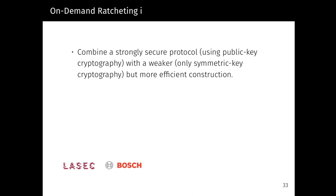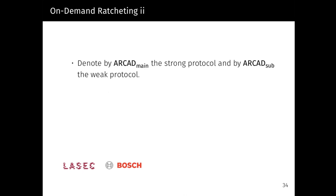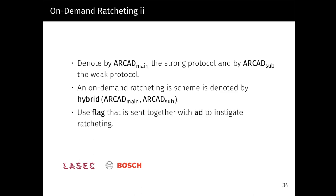We move on to the notion of on-demand ratcheting where we combine a strongly secure protocol using public key cryptography with a weaker protocol that is only based on symmetric primitives that is more efficient. The weaker protocol is used for frequent exchanges where no post-compromised security is guaranteed, and the strong protocol is engaged periodically. For example, ratcheting could be administered at the application level or even by the users themselves. For this, we denote by RCAT_main the strong protocol and by RCAT_sub the weak protocol. The composition of RCAT_main and RCAT_sub we call a hybrid, and we instigate a ratcheting execution with a flag that is sent alongside the associated data.